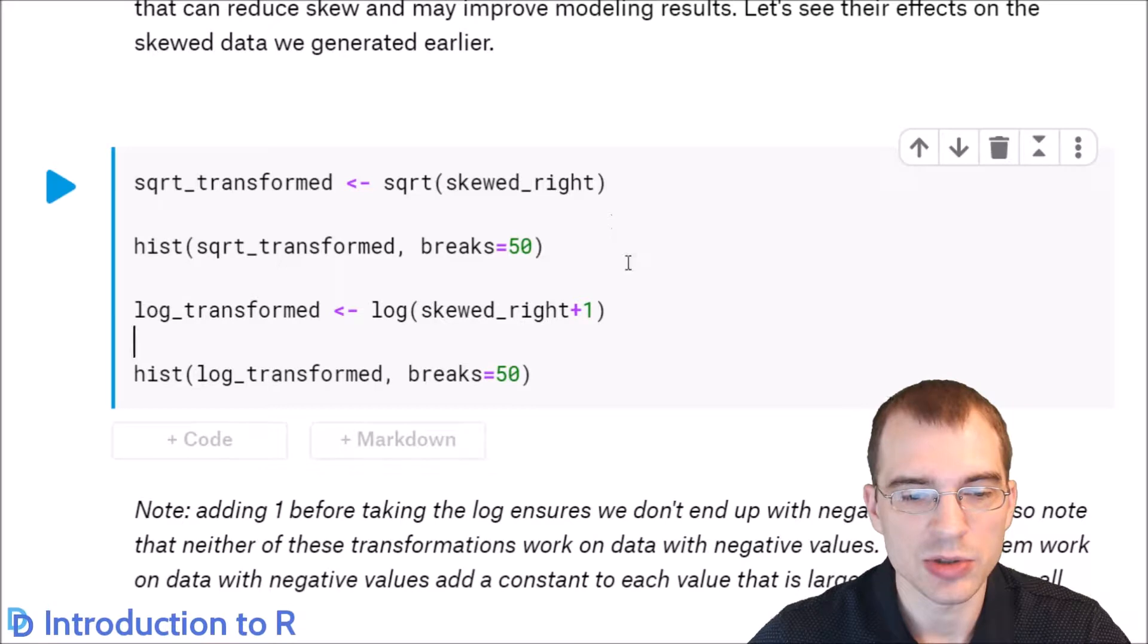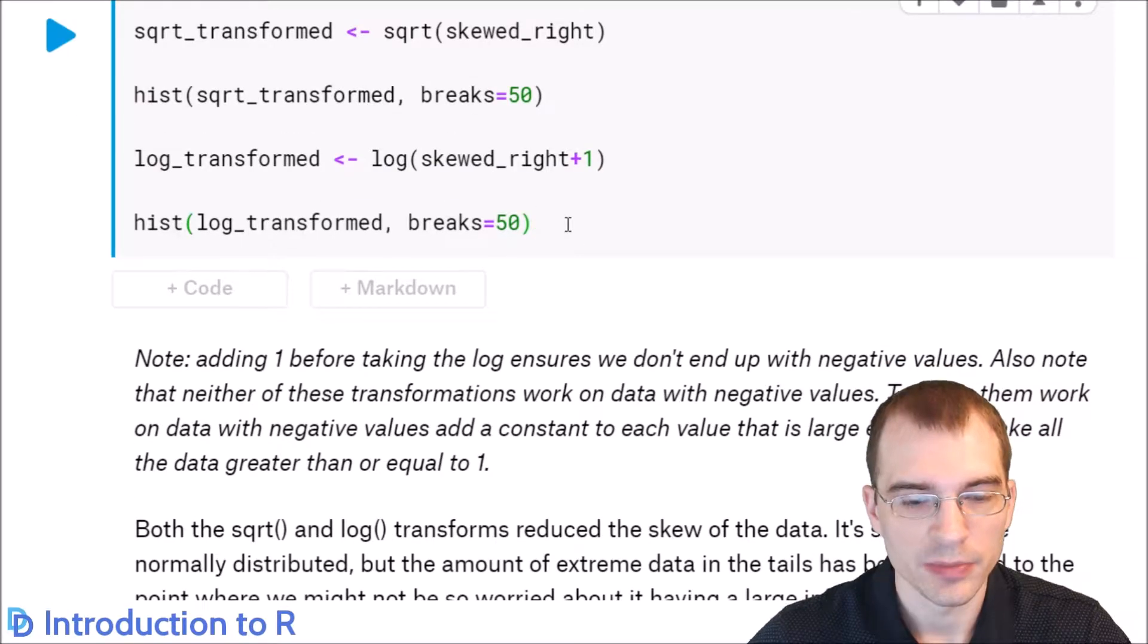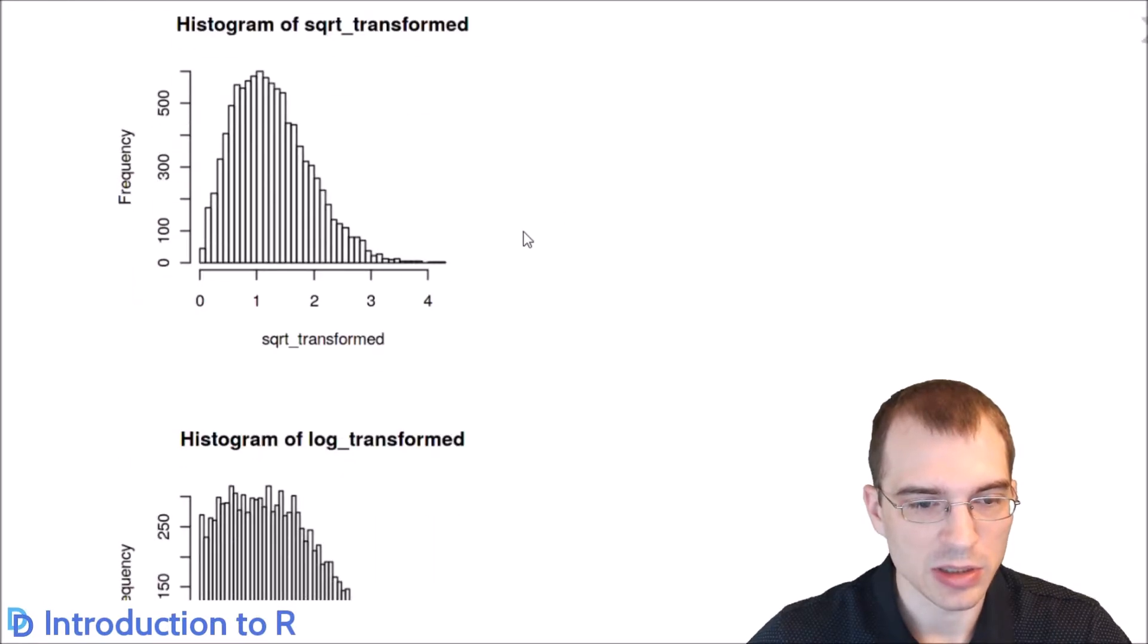We'll see what it did to the skew of that data set. You can see that with the square root transformation the skewed data looks much more like the normal distribution now. It's not perfect, it still exhibits some right skew, but it's much better than it was before.